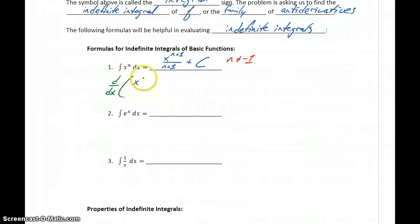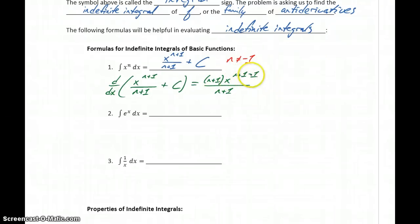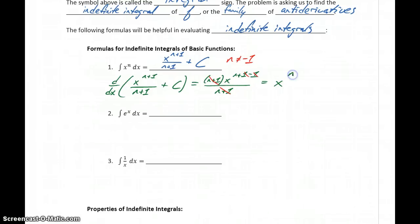We can check this to show it's true. If we take the derivative of x to the n plus 1 divided by n plus 1 plus some constant C, our power rule says n plus 1 comes down as a factor in front, giving us n plus 1 times x to the n plus 1 minus 1, over n plus 1. The n plus 1 over n plus 1 cancels, leaving us with x to the n. So to integrate a power function, increase the exponent by 1, divide by that same amount, and add the constant plus C.